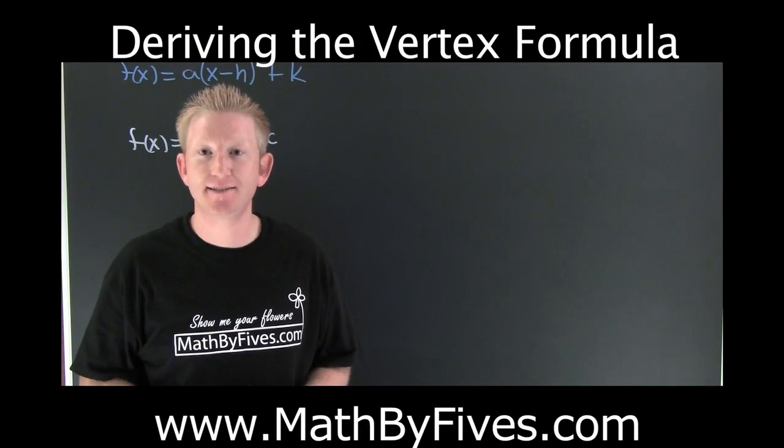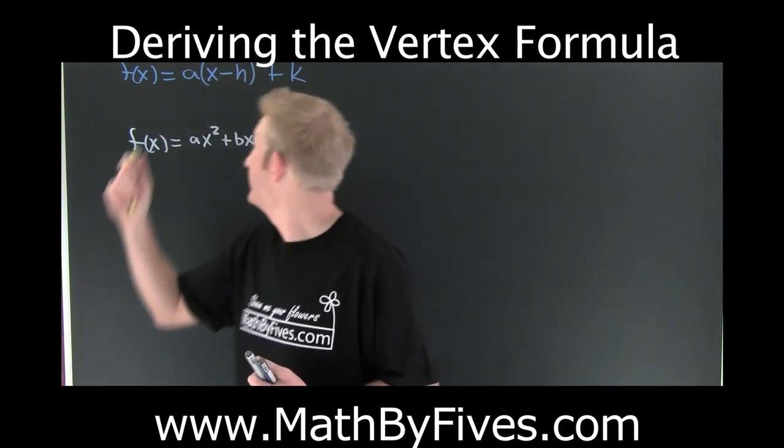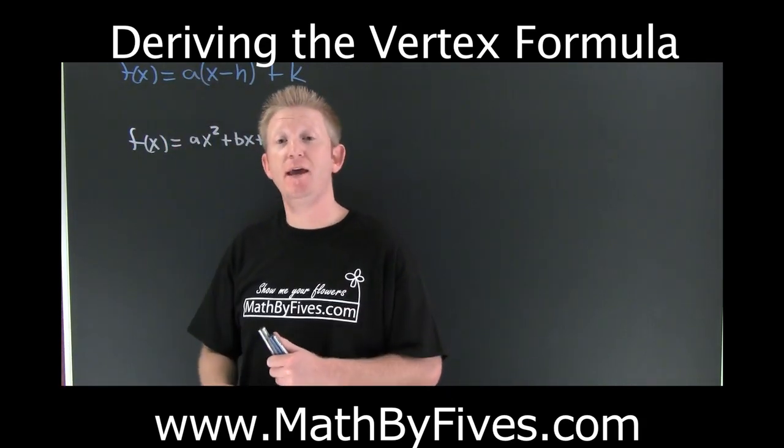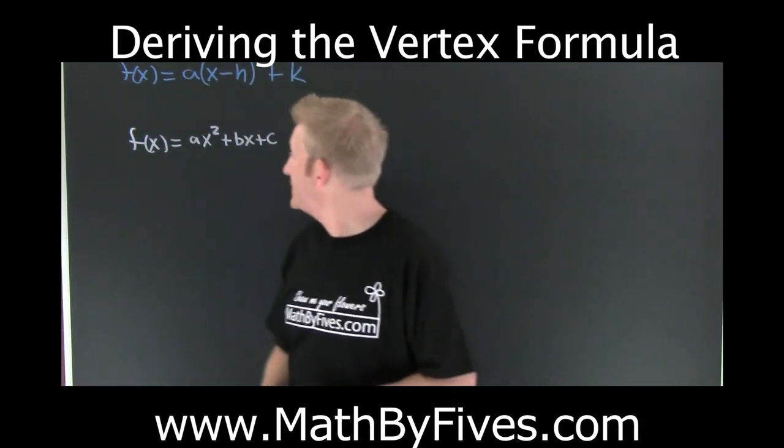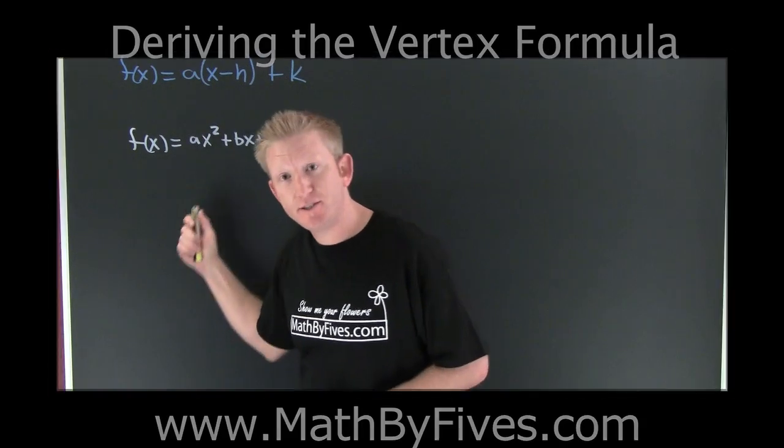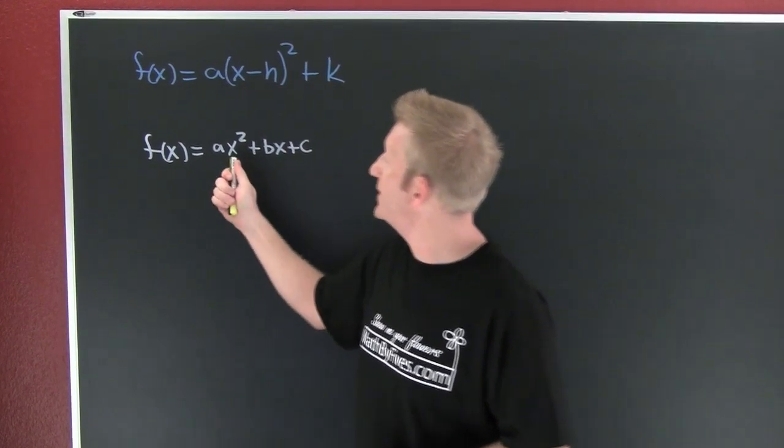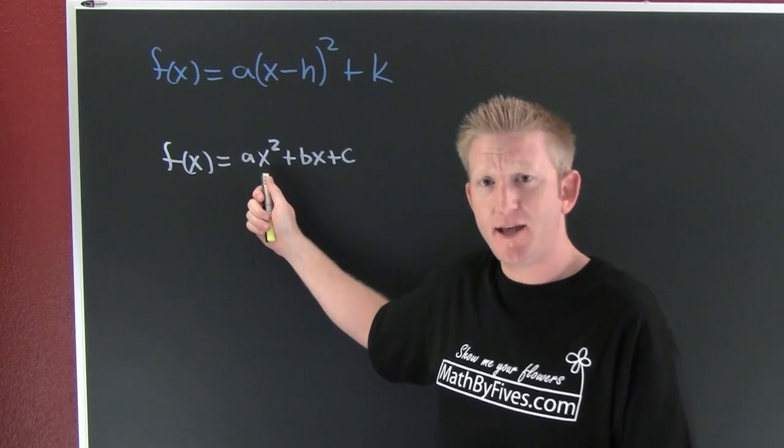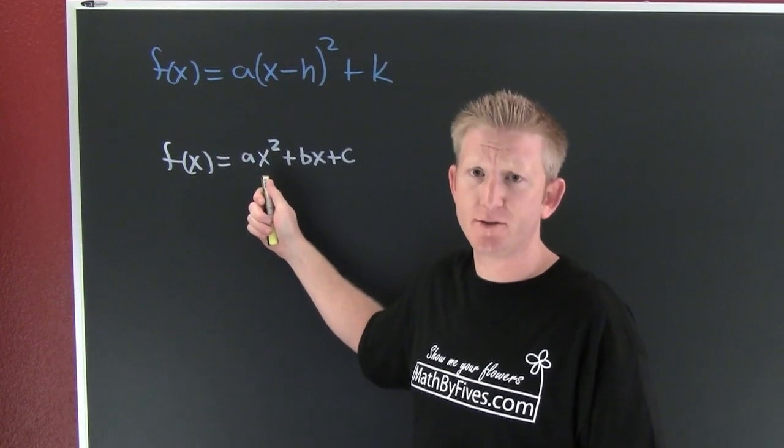We saw in that last example that graphing when you're in the preferred form is cheap and easy. Now we must address how we're going to get the general quadratic into that form. We're going to complete the square.